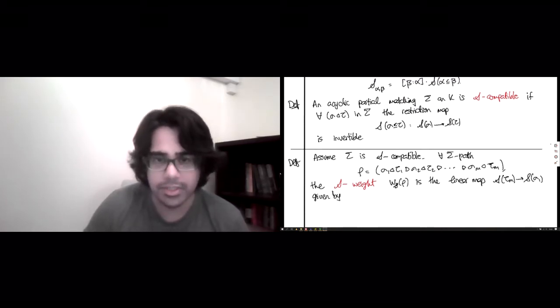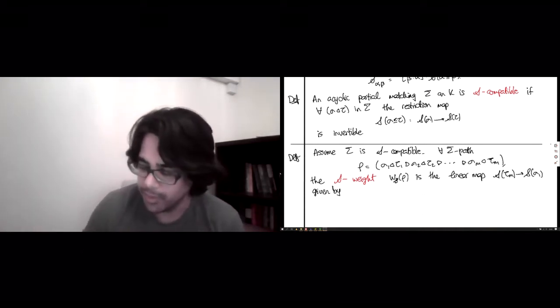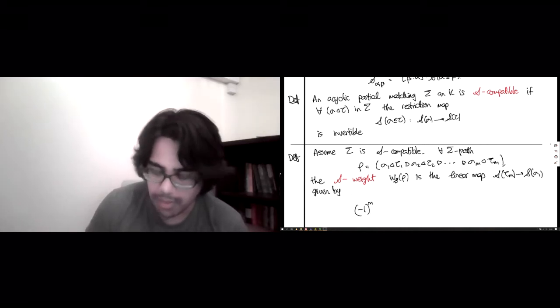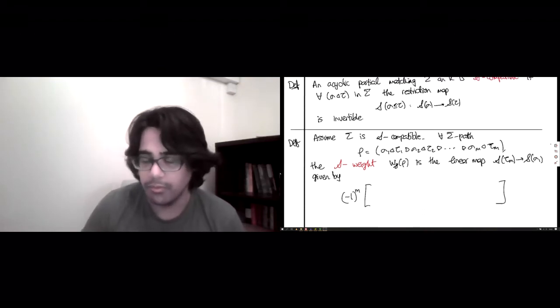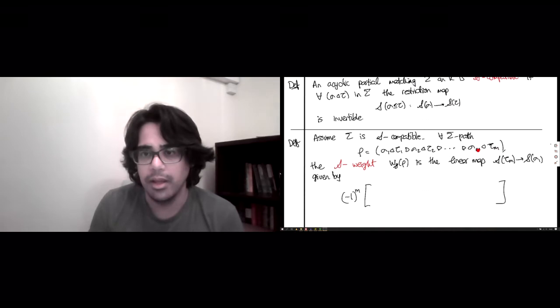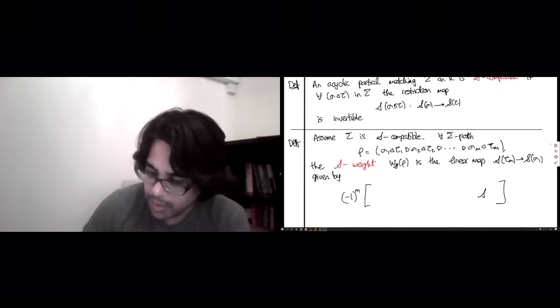And the same principle that we had before applies, which is every time you see a less than, you want to put something in the denominator. Every time you see a greater than, you want to put things in the numerator. So I'm going to pull out a minus 1 to the m here. And now this is going to be a giant composite. And so let's see what this is going to be a composite of. So the first thing you want is the ability to get from the stalk of tau m to the stalk of sigma m. Now there is no restriction map going from tau m to sigma m. There's a restriction map going from sigma m to tau m. And by our assumption in compatibility, this map is invertible. So the only thing I can realistically put here is sigma m, tau m, that scalar restriction map inverse.